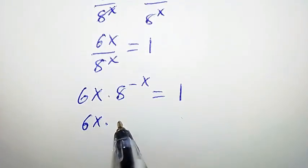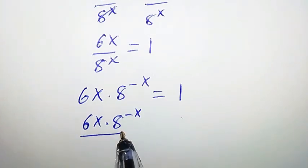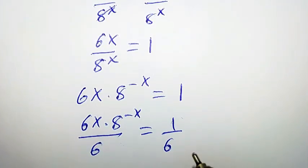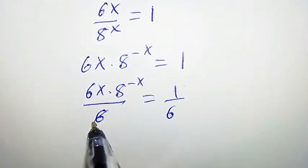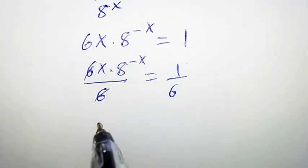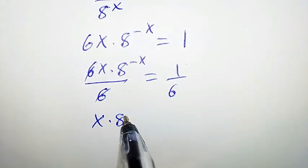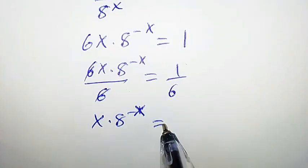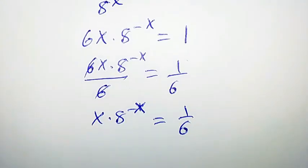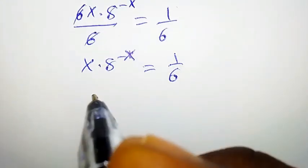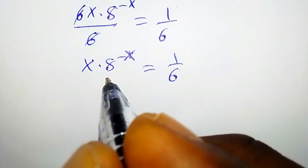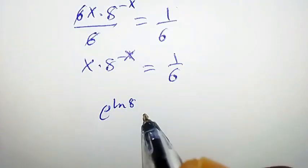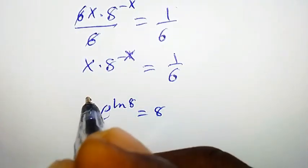Dividing both sides by 6, the 6 cancels, leaving x times 8 to the power of negative x equal to 1 over 6. Note that 8 can be written as e to the power of ln 8.